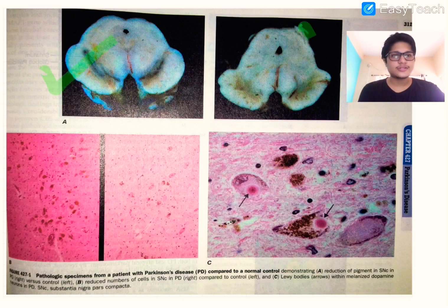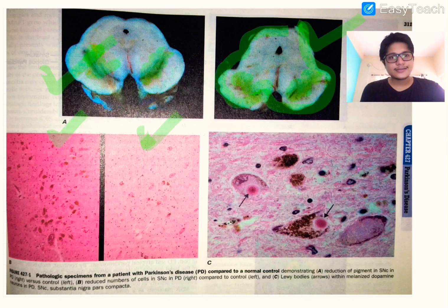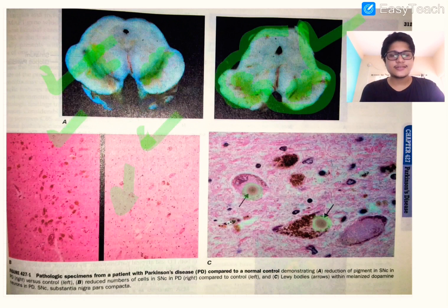This is a histopathological section of the midbrain — in a normal patient versus a Parkinson's disease patient. In the Parkinson's patient there is gross atrophy and pigment loss in the substantia nigra. The microscopic section shows decreased quantity of neurons, and these are Lewy bodies, which are aggregates of alpha-synuclein protein.